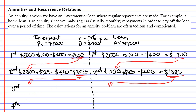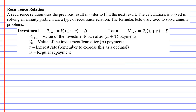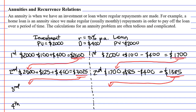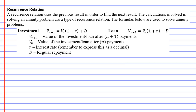This brings us to what is known as a recurrence relation. A recurrence relation uses the previous result in order to find the next result. The calculations we were making here are called recurrence relations. We actually have some formulas — a formula we use for an investment and a formula we use for a loan.